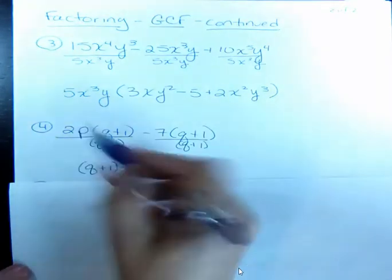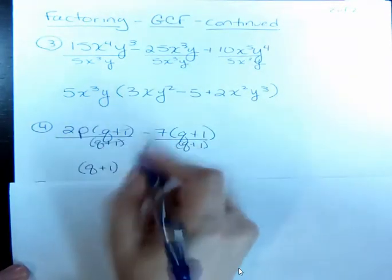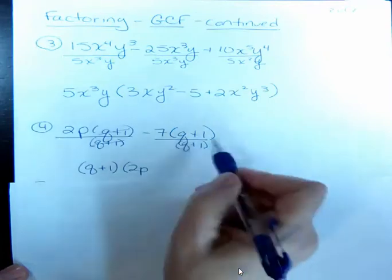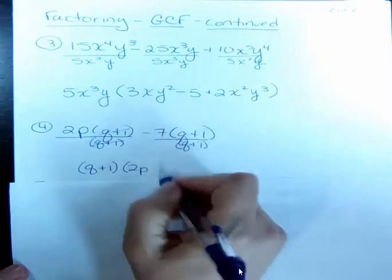So you can see what happens. The q plus 1s go away, but you're left with 2p. And then the q plus 1s go away, and you're left with minus 7.